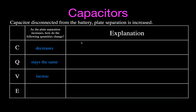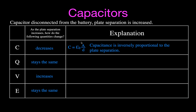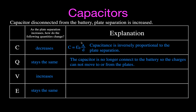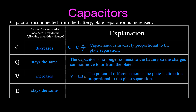The capacitance decreases for the same reason as before - increase the distance, decrease the capacitance. The charge stays the same because there's nowhere for the charge to go; once the charge is on the plates and we disconnect from the battery, we cannot change it. The voltage increases because it's directly proportional to the plate separation - pulling those plates apart does work and increases the voltage. The electric field strength stays the same because the charge density stays the same: the plates have the same area, the same amount of charge, and the permittivity of free space is just a constant.